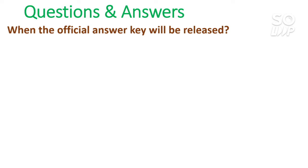When will the official answer key be released? I think there is not much time left for the March attempt, so they will release the answer key by the 2nd of March. You can expect it to be available for one or two days maximum. You need to download it to verify your marks, because in some cases students find themselves confused after getting the result — they calculate marks using some unofficial answer key that is not 100% correct, and then find their percentile is lower than expected on their calculated marks.